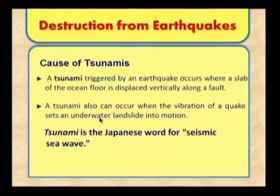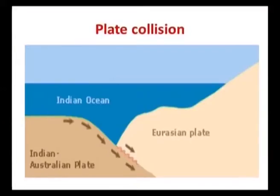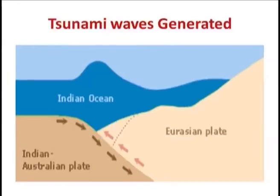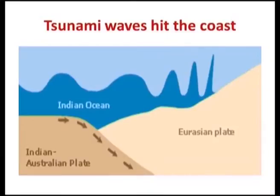Tsunami occurs when the vibration of the earthquake sets an underwater landslide into motion. Tsunami is a term from Japanese, also called sea waves. Due to displacement in the fault zone, one block goes down and another goes up. Due to the upliftment, huge water goes back and water travels very fast on the other side. Near the earthquake, the tsunami speed can be 835 kilometers per hour. As distance increases and water depth reduces — for example 340 kilometers out, water depth 20 meters — the tsunami speed reduces but the wave height increases.